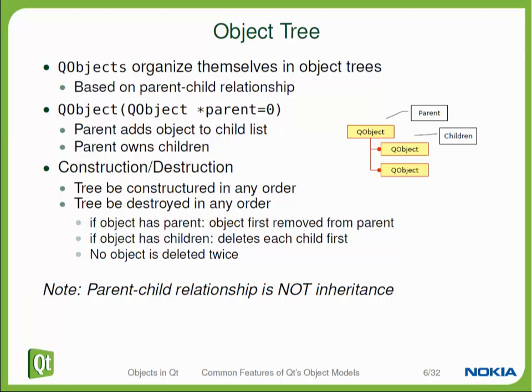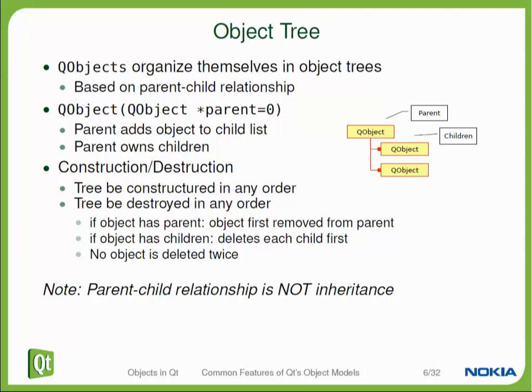One feature that QObject adds to its inheriting classes is memory management. Every QObject that you create and that you pass a parent to during construction will be registered with that parent. And when that parent is deleted, it will delete this QObject too. That is called ownership — the parent owns the child. This system usually leads to the fact that in Qt programs you don't see many calls to delete, but you see many calls to new. All the memory management of the dynamically allocated QObjects is pretty much done automatically.